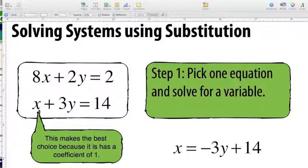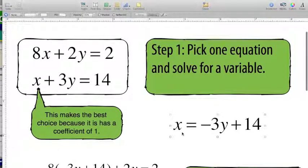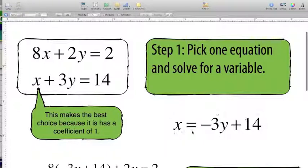If you can, we want to take that one and solve it for that variable. In this case, it's going to be x. And you can see right here, I have picked this equation. I solved it for x. You look at it and we have x equals negative 3y plus 14.